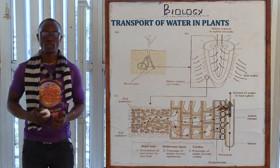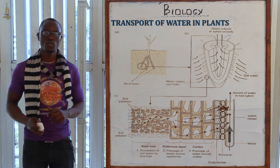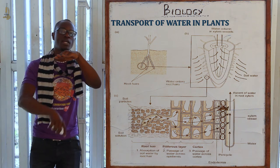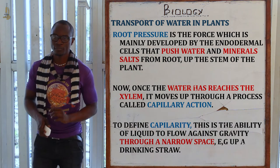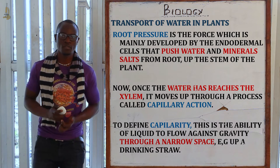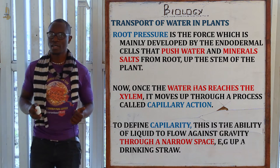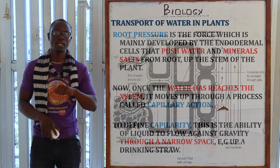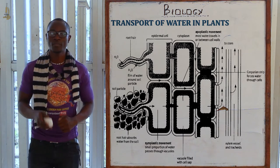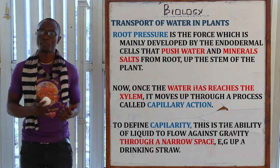As the water reaches the xylem vessel, it accumulates and pushes up the stem, creating root pressure. Root pressure is the hydrostatic force developed by the endodermal cells that pushes water and minerals up the stem. One water molecule comes in, the next pushes it up, and so on until the water reaches the leaf. However, root pressure is a very weak pressure compared to the other pressures.